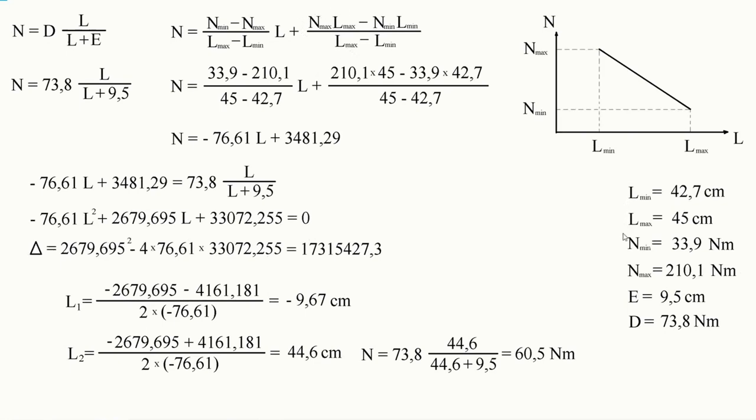We already know the minimum and maximum values of the N and L for this specific torque range. When we plug all known numbers into the equations, we can compare them. Group all values on one side and set it to zero. Now we have a quadratic function and by calculating delta, we can determine the L value.